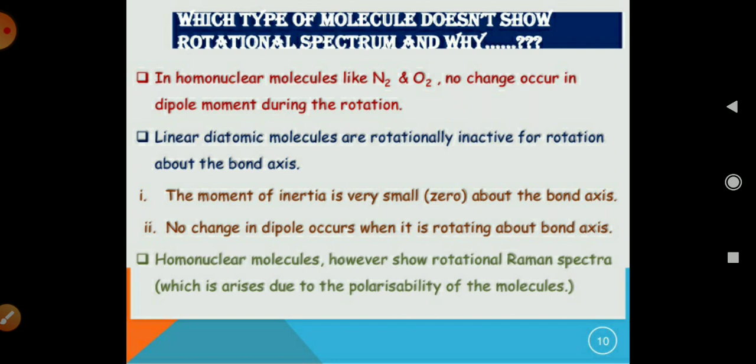Now, in homonuclear molecules like N2 and O2, there is no change occurring in dipole moment during rotation. So linear diatomic molecules are rotationally inactive for rotation about the bond axis. The moment of inertia is very small, near about zero, and no change in dipole moment occurs when it is rotating about the bond axis. However, homonuclear molecules show rotational Raman spectra, which arises due to the polarizability of the molecule.